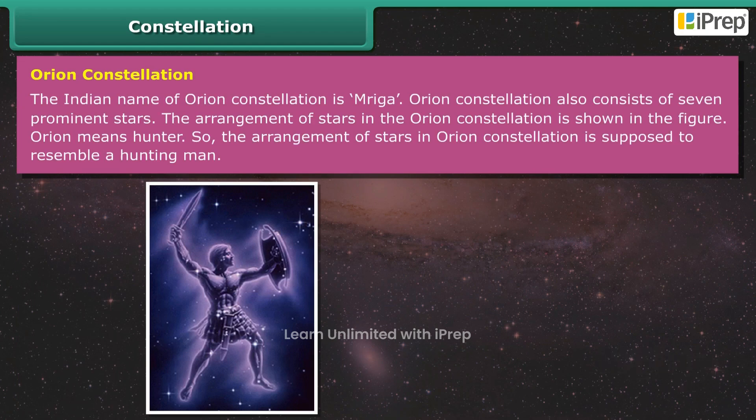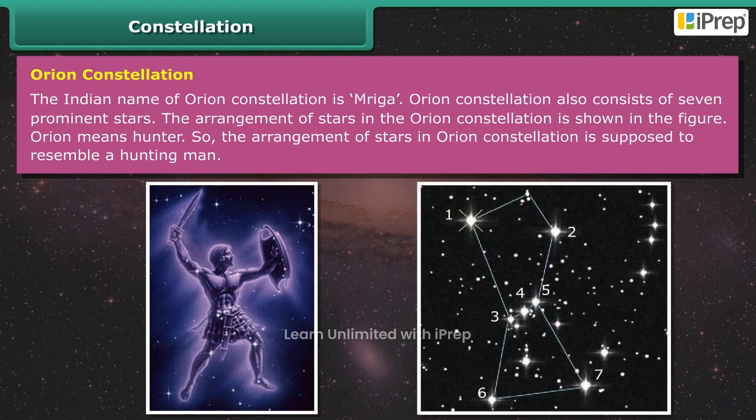Orion constellation — the Indian name of the Orion constellation is Mriga. The Orion constellation also consists of seven prominent stars. The arrangement of stars in the Orion constellation is shown in the figure. Orion means hunter, so the arrangement of stars in the Orion constellation is supposed to resemble a hunting man.